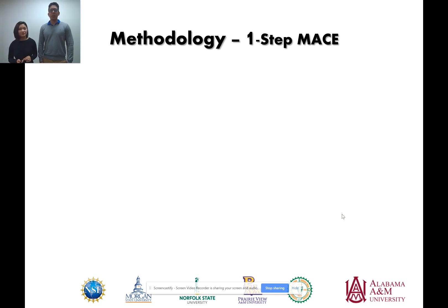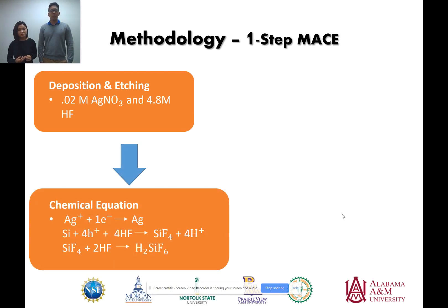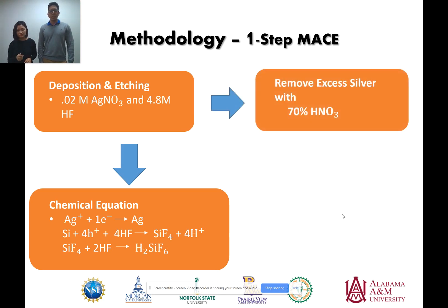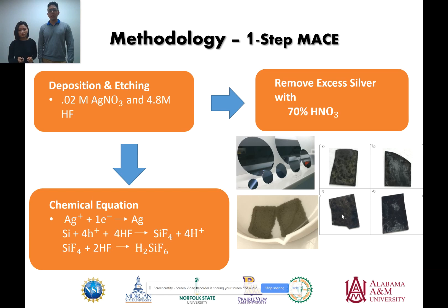We continue with our one-step MACE methodology. We prepare a deposition and chemical etching solution with 0.02 molarity silver nitrate and 4.8 molarity hydrofluoric acid. In this process, deposition takes place where a silver ion gains an electron and the silicon substrate loses an electron. The silver ion is deposited onto the silicon substrate, which becomes oxidized and soluble in the hydrofluoric acid solution. The silicon particle then sinks into the silicon substrate, thereby creating silicon nanowires. We then remove excess silver with 70% nitric acid. On the bottom left, we have pictures of bare silicon wafers placed in a chemical etching solution, and on the bottom right, the etching solution dried and removed of any excess silver ions.